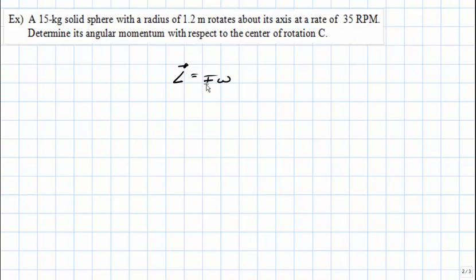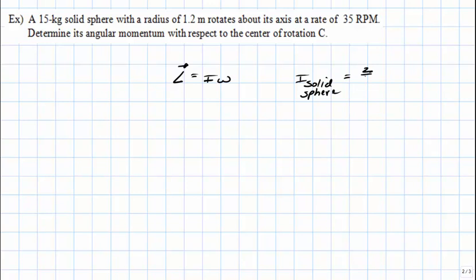The first thing we need to determine is the moment of inertia. This is a solid sphere, so we refer to our textbook table. The moment of inertia for a solid sphere is given by two-fifths MR squared. The mass is 15 kilograms and the radius equals 1.2 meters. If we process this using a calculator, the solution is 8.64 kilogram meters squared.